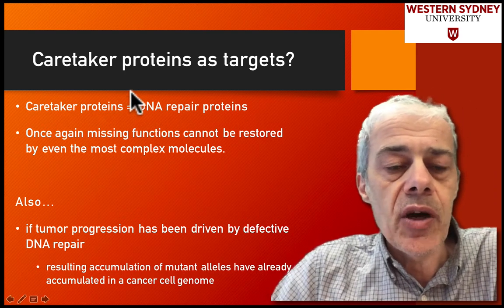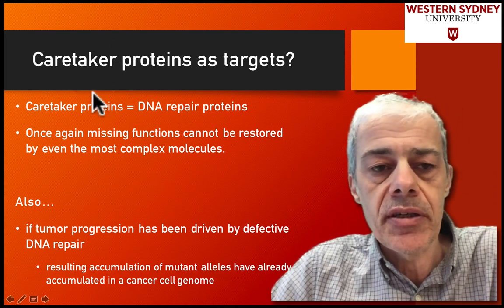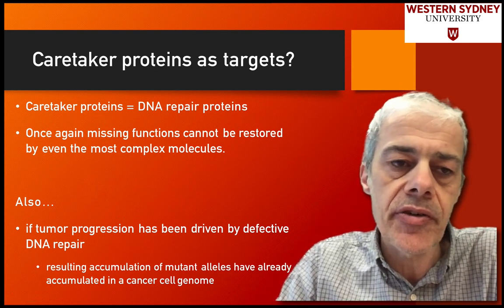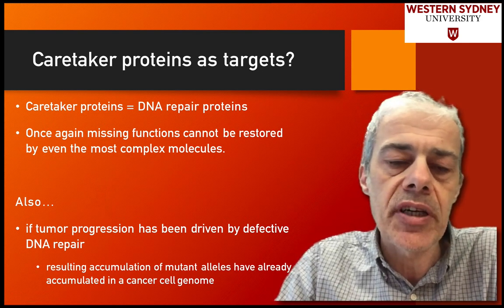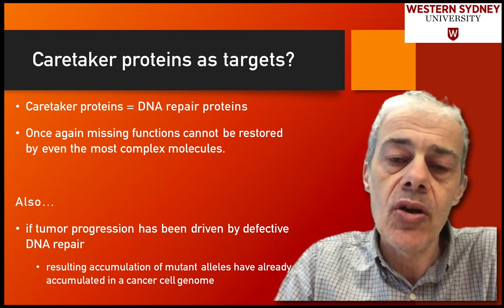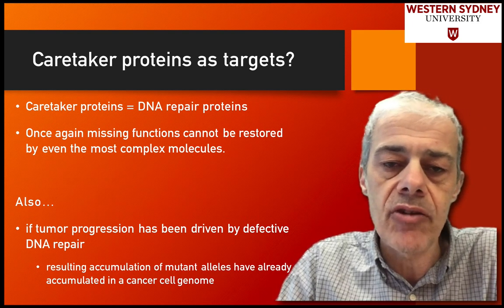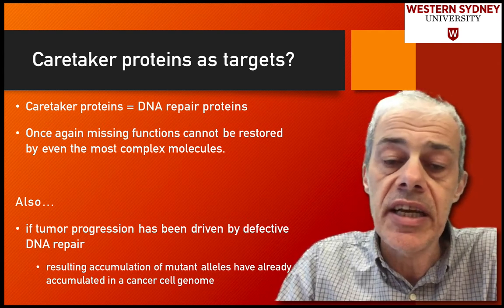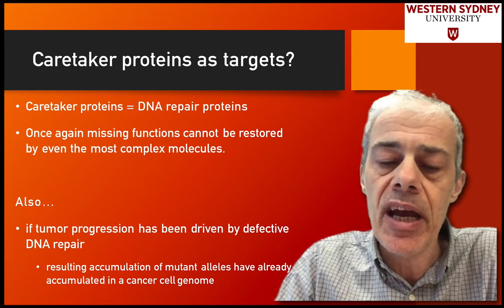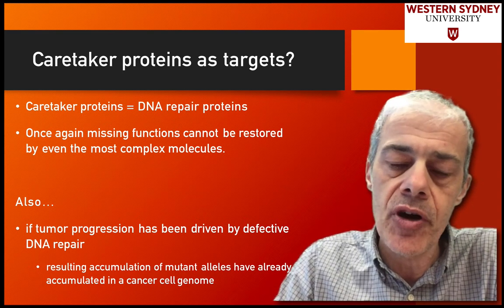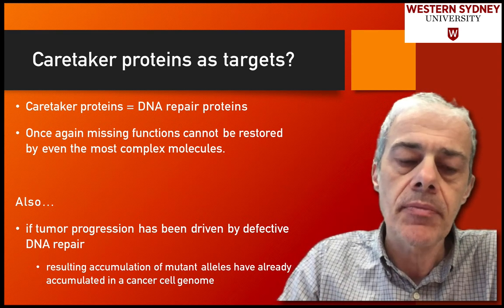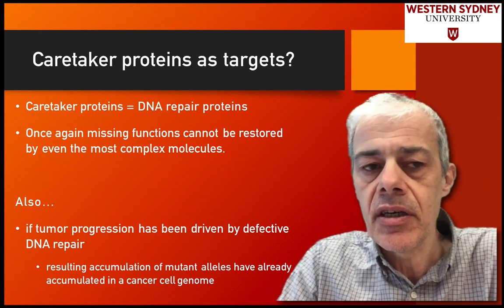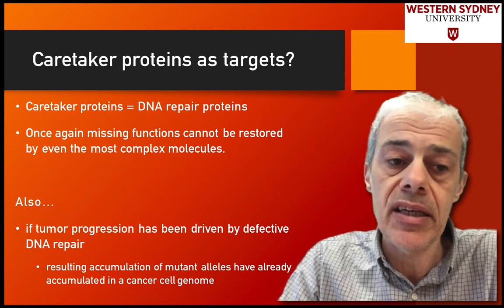There's a class of proteins called caretaker proteins — a term we haven't used in this lecture series. Caretaker proteins are proteins that look after the cell and are involved in maintenance of DNA integrity. DNA repair proteins are a typical caretaker protein; during normal metabolism DNA gets damaged and these proteins come in to repair the damage.